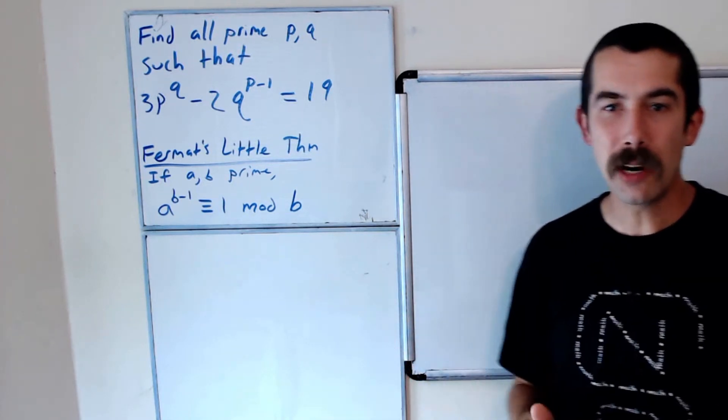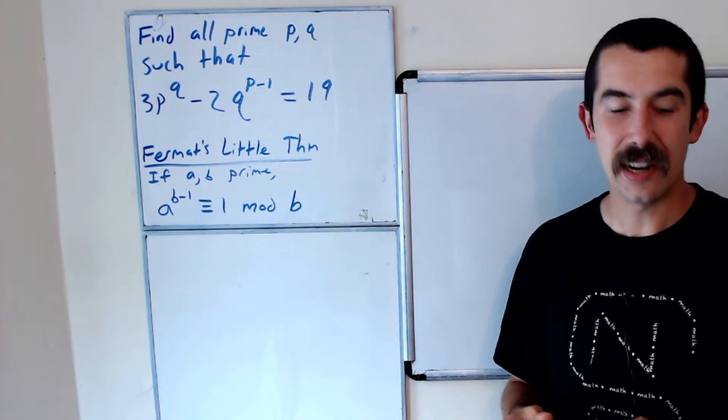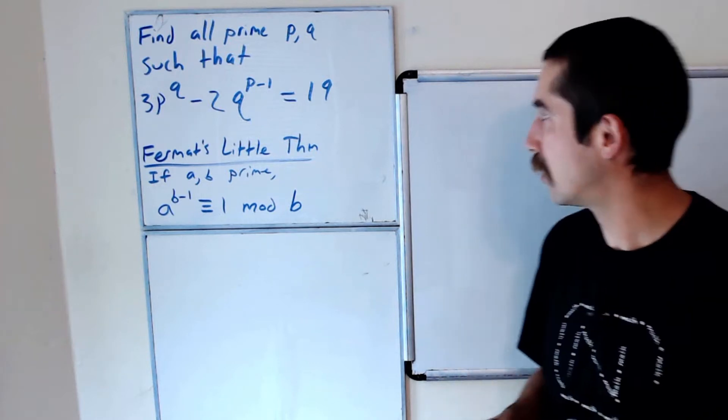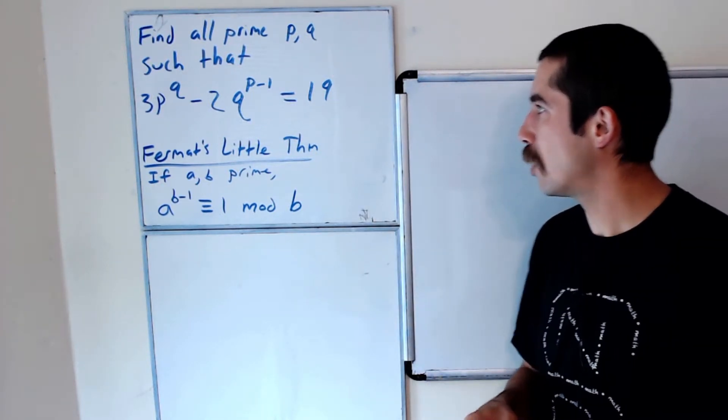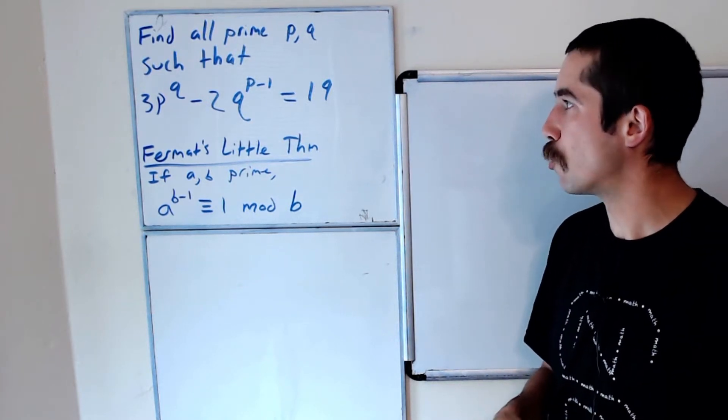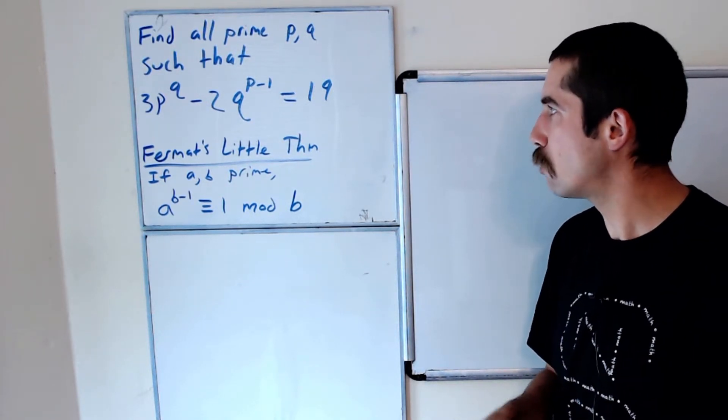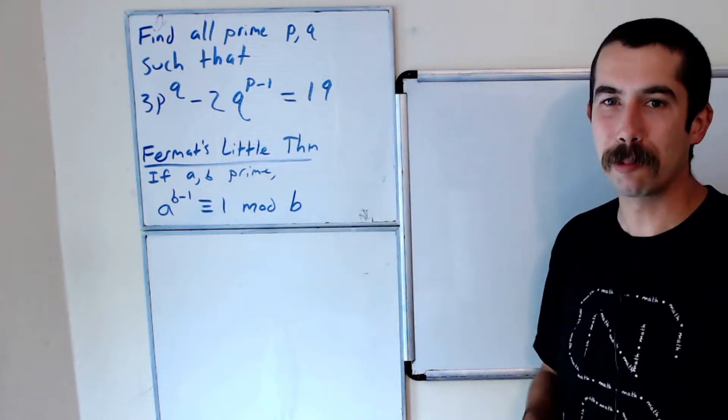Here's a number theory question from the 2014 Ukrainian National Math Olympiad. Find all primes p and q such that 3p^q - 2q^p - 1 is equal to 19.